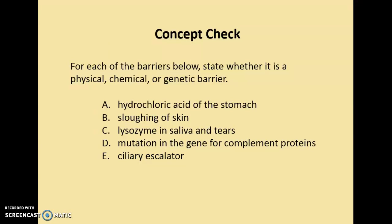Concept check: for each of the barriers listed, state whether it is a physical, chemical, or genetic barrier. Hydrochloric acid of the stomach is a chemical barrier. Sloughing of the skin is physical — the purpose is that bacteria or microorganisms growing on the surface of the skin are carried away as that skin sloughs off, limiting the amount of microorganisms that grow and live on the skin.